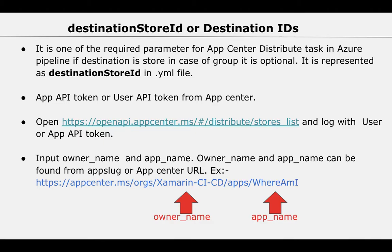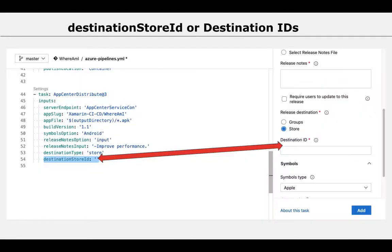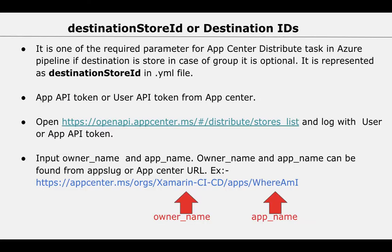This is a very important parameter for the App Center distribution task in Azure Pipeline. It is required when you are going to use a store to release your build. If you set the release destination to 'store', this parameter becomes mandatory. If you select release destination as a 'group', it is optional. In this session I am considering releasing to a store.